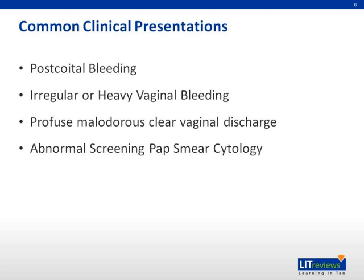The presentation of cervical cancer can be quite variable. Pre-invasive or minimally invasive disease is generally asymptomatic and detected with screening pap smear. More advanced disease can present as post-coital bleeding, which occurs because trauma during intercourse to the friable cervical cancer causes bleeding. Rarely, cervical cancer can present as a sudden, massive, life-threatening bleed, which requires emergent treatment. Finally, a large cervical mass can become necrotic and present with profuse, malodorous vaginal discharge.